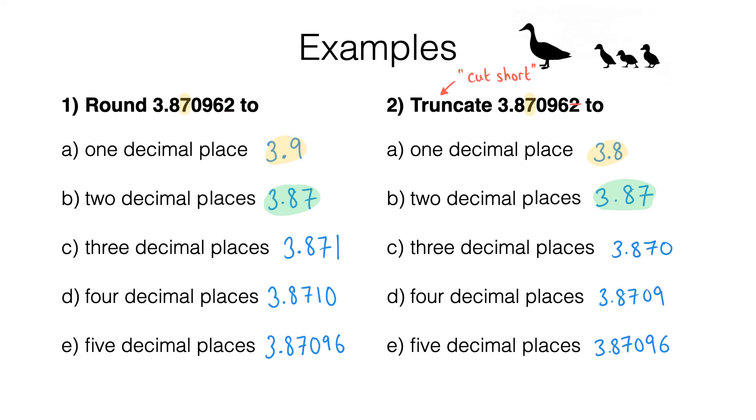That's why it becomes 3.9 when we round to one decimal place. But when we truncate, we simply discard all digits from there onwards, ending up with 3.8.